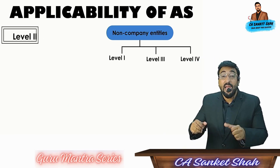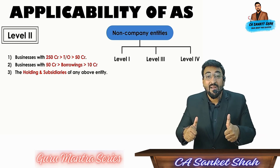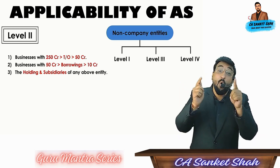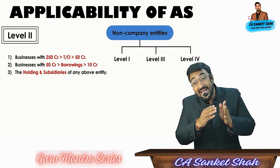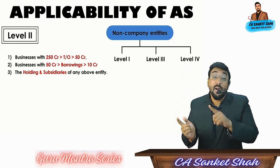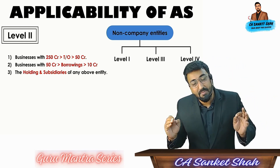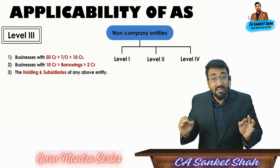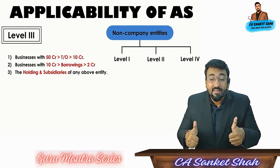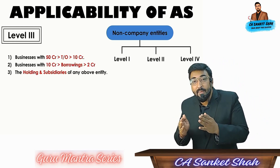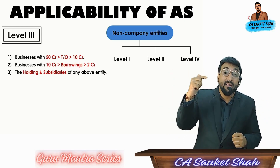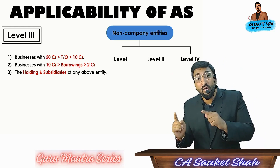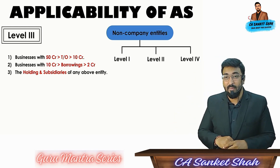Now what is level 2? In level 2, criterias are: turnover less than 250 crores but more than 50 crores, and borrowings less than 50 crores but more than 10 crores, and holding and subsidiary of the above. Level 3 criterias are very easy: business having turnover less than 50 crores but greater than 10 crores, and borrowings less than 10 crores but more than 2 crores, and holding and subsidiary of the above.